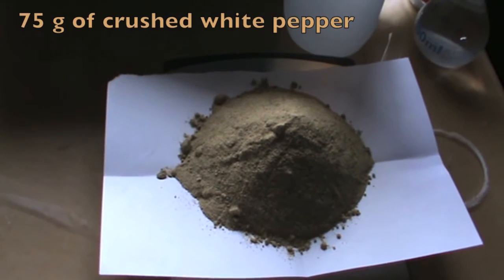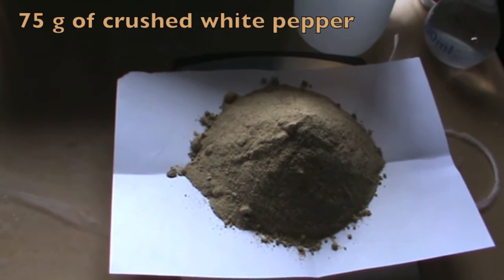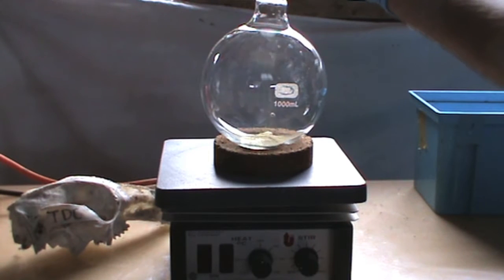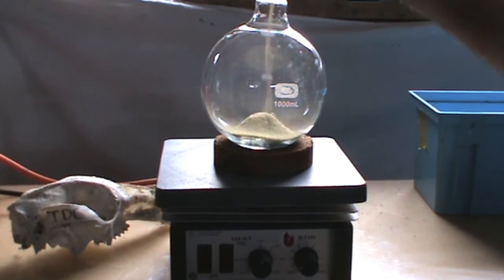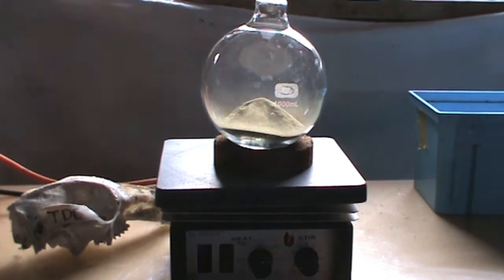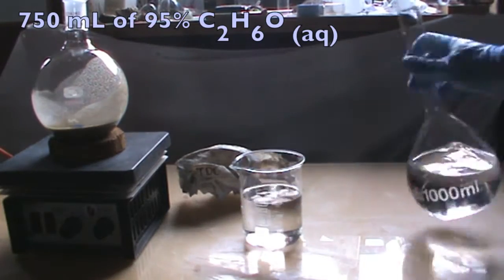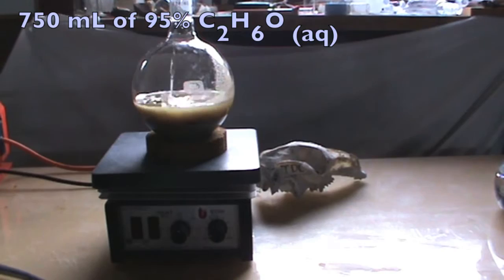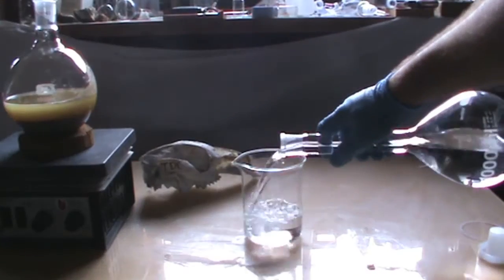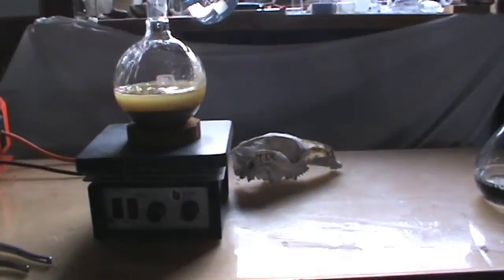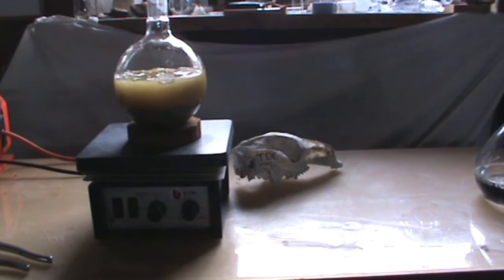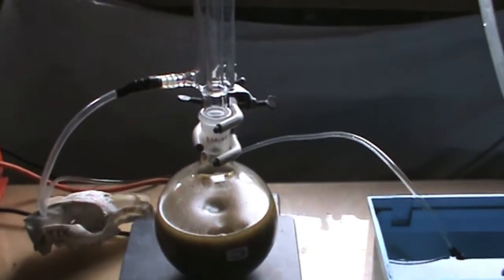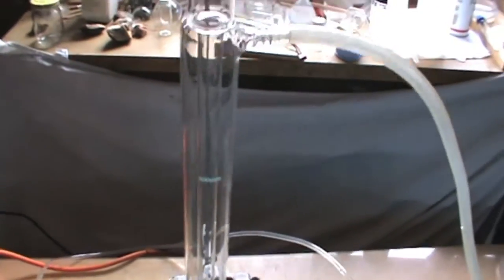Weigh out 75 grams of crushed white pepper and place it into a suitable one-neck round-bottom flask. After that, add in 750ml of 95% ethanol. Also, make sure to add in a magnetic stir bar. Now set up the necessary apparatus for reflux.